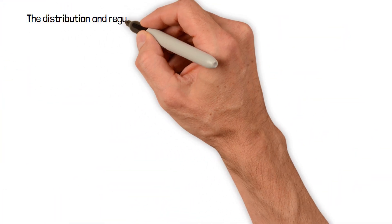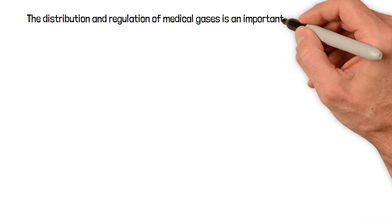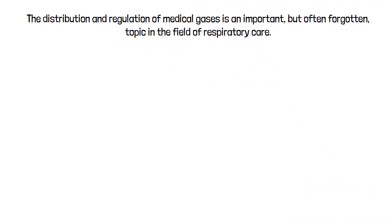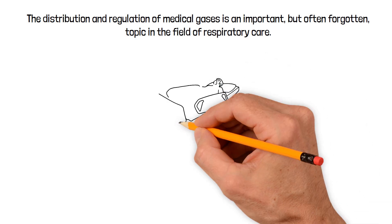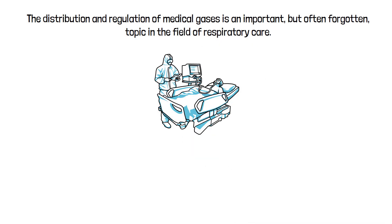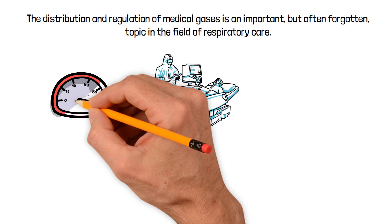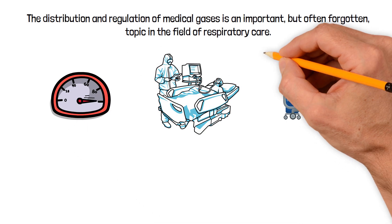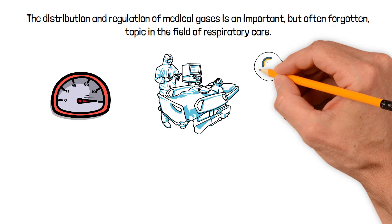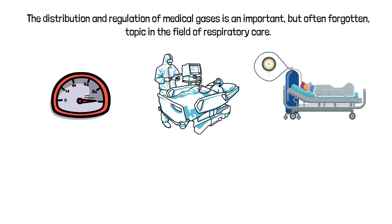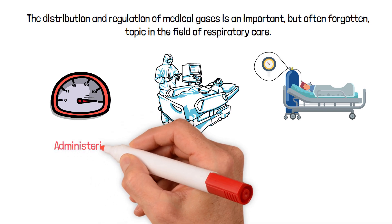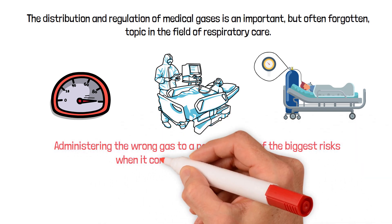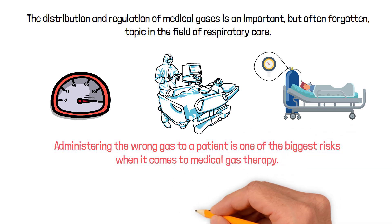The distribution and regulation of medical gases is an important but often forgotten topic in the field of respiratory care. In general, oxygen delivery systems store medical gases at extremely high pressures, so before a gas can be administered to a patient, the pressure must be reduced to a safe and workable level. You should also know that administering the wrong gas to the wrong patient is one of the biggest risks when it comes to medical gas therapy.